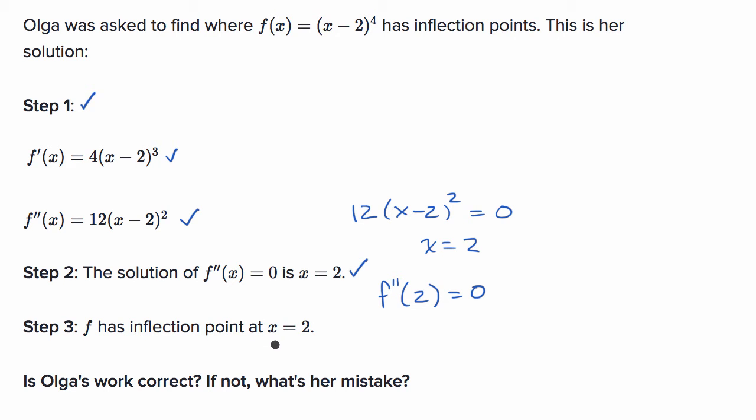Remember, an inflection point is where we go from being concave upwards to concave downwards, or concave downwards to concave upwards, and speaking in the language of the second derivative, it means that the second derivative changes signs as we go from below x equals two to above x equals two. But we have to test that, because it's not necessarily always the case. So let's actually test it.